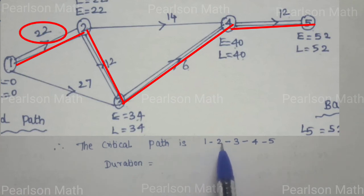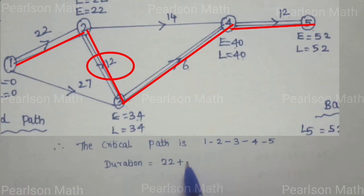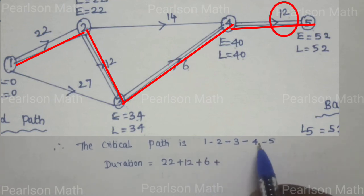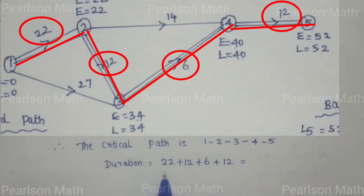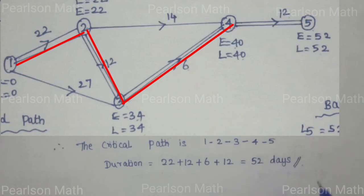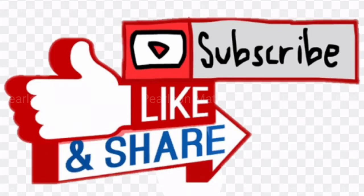Now, duration equals: 1 to 2 duration is 22, plus 2 to 3 which is 12, plus 3 to 4 which is 6, plus 4 to 5 which is 12. I will add 22 plus 12 plus 6 plus 12 equals 52 days. That's it.